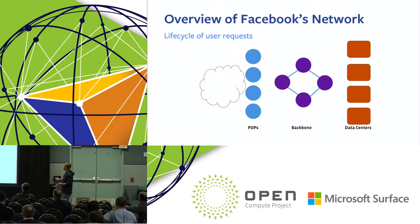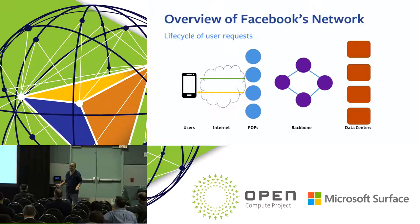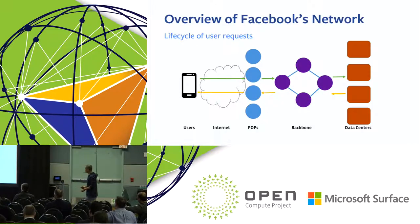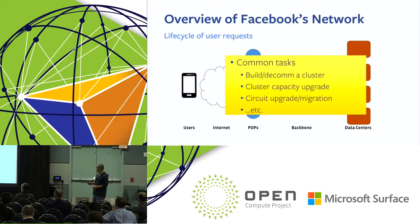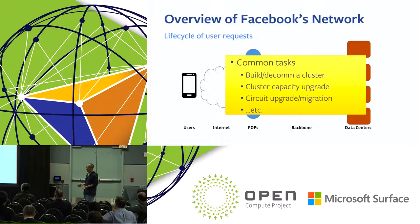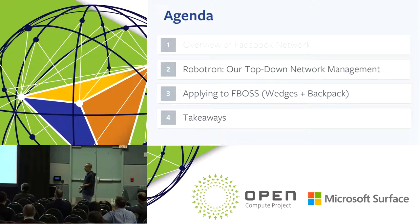This is an overview of our Facebook network. When a user request comes in, it goes to our POP site. If the POP can answer the request, it returns the answer directly; otherwise the request routes to our data center via the backbone and then returns the answer to the user. Common network operation tasks we need to do across different spaces include building a new cluster, upgrading the capacity of a cluster, and upgrading or migrating circuits. In order to streamline all these network operations, we built our network management system called Robotron.